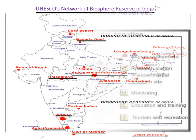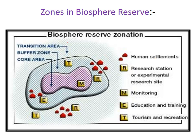Within a biosphere reserve there are three zones: the core zone, the buffer zone, and the transition zone. In the core zone, only monitoring happens — no human activity, educational, or training activities are allowed. In the buffer zone, tourism and human settlements are allowed, along with research stations and educational and training activities. In the transition zone, tourism, research practices, and human settlements are also permitted.